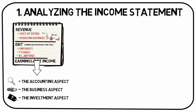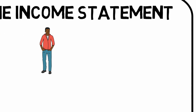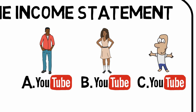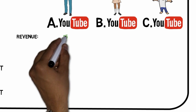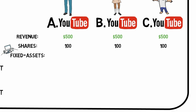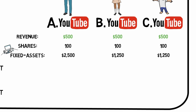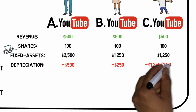Allow me to present an absurd hypothetical example. Imagine that you have the possibility to invest in one of three different YouTubers — A, B, and C. They produce videos in the same niche. All of them have the same revenue, say $500 per year from ads, and they all have 100 shares outstanding. They all bought computers during their first year: YouTuber A paid $2,500 for his, while B and C paid $1,250. A and B depreciate their computers over five years, while C writes off the whole value in just one year.